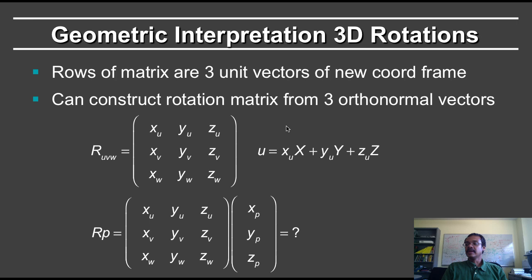The corollary of this is that given three orthonormal vectors — orthonormality means the u-vector dot the v-vector equals 0, u-vector dot w-vector equals 0, v dot w equals 0, and u, v, and w are unit vectors — given any three such vectors, it's just a rotation of the standard x-y-z coordinate system, and we can create a rotation matrix from that.